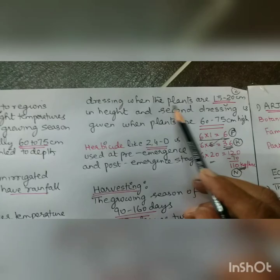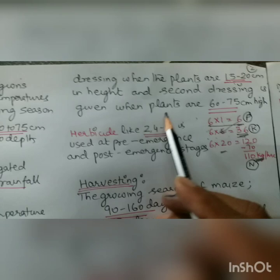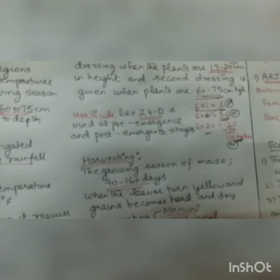The first dressing is given when the plants are 15 to 20 centimeters tall, and the second dressing when the plants are 60 to 75 centimeters tall. When we give these two dressings, we get a good yield.